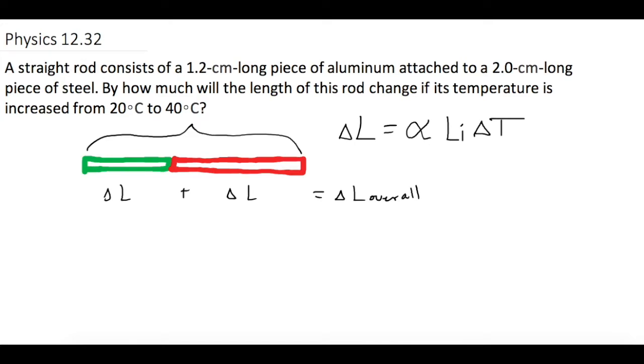They tell us that initially the length for aluminum is 1.2 centimeters or 0.012 meters. The initial length for the steel is 2 centimeters or 0.02 meters.